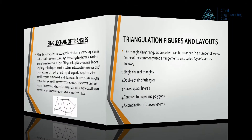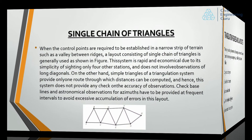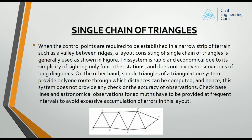Single chain of triangles: when control points are required to be established in a narrow strip of terrain, such as a valley between ridges, a layout consisting of a single chain of triangles is generally used, as shown in the figure. This system is rapid and economical due to its simplicity of sighting only four other stations and does not involve observations of long diagonals.